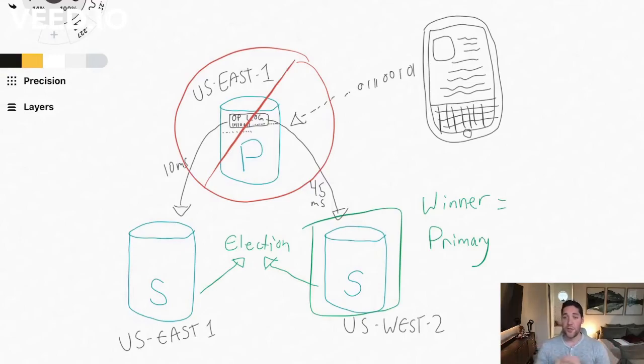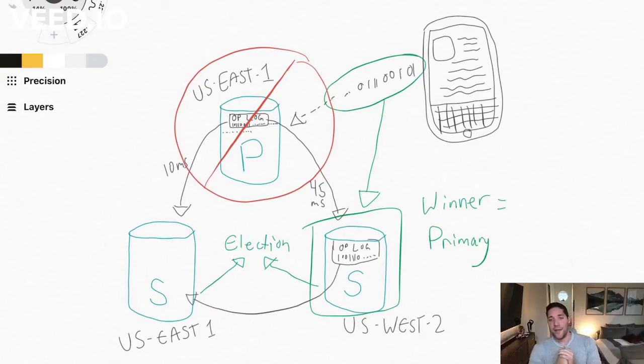So now that we have our new primary, the data is automatically going to be routed from the application to the new primary. And then the primary will have an operation log, which is then replicated to the new secondary. So this is a really high-level overview of why we have replication - it's for high availability and to avoid single points of failure, and what happens if we do have one of our replica members that goes down. Thanks for watching.